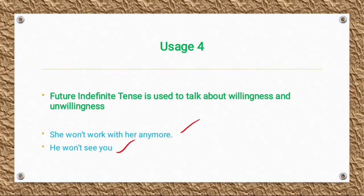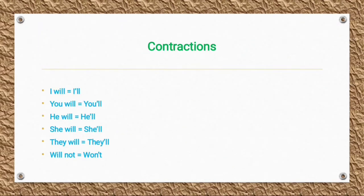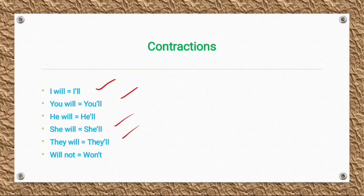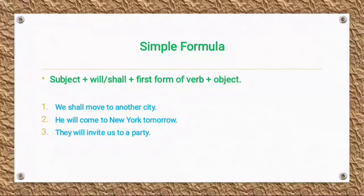Contractions: 'I will' becomes 'I'll', 'you will' becomes 'you'll', 'he will' becomes 'he'll', 'she will' becomes 'she'll', 'they will' becomes 'they'll'. 'Will not' is contracted to 'won't'.